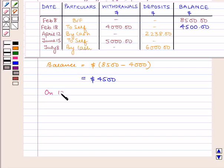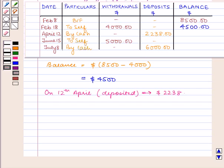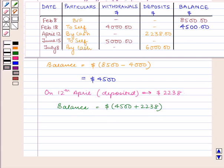Now on 12th April an amount of 2238 dollars is deposited, so the balance will be 4500 dollars plus 2238 dollars, which is equal to 6738 dollars. So the balance amount on April 12th becomes 6738 dollars.